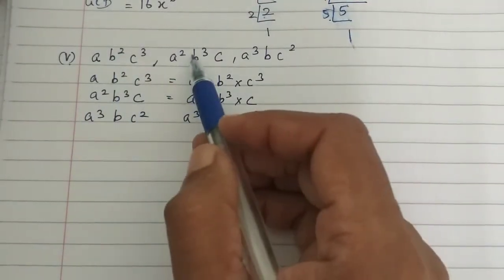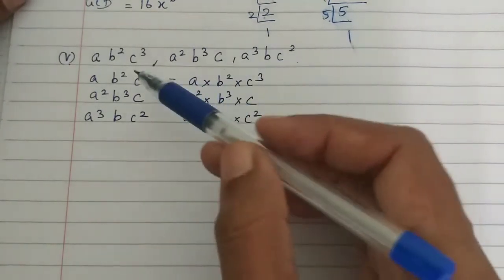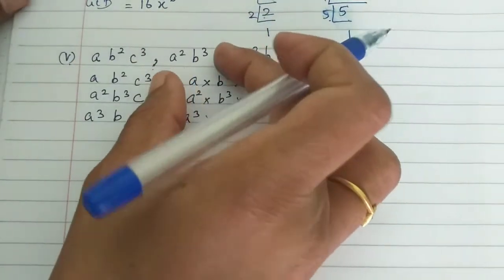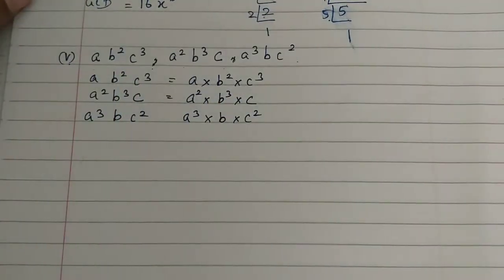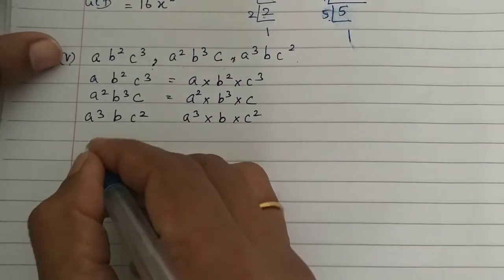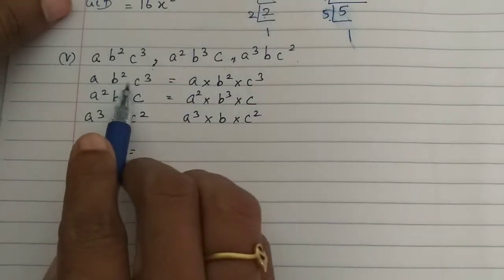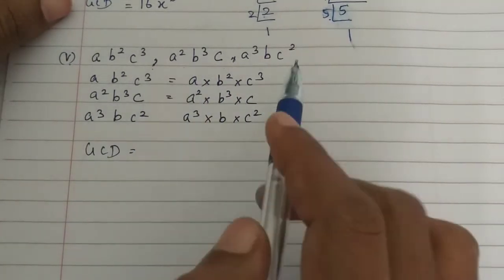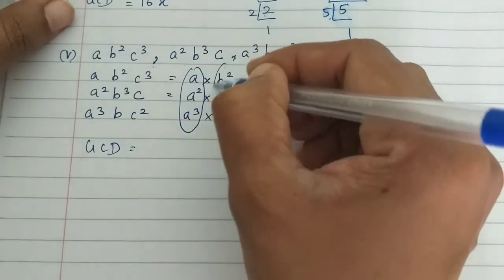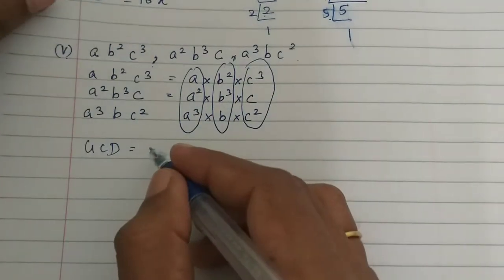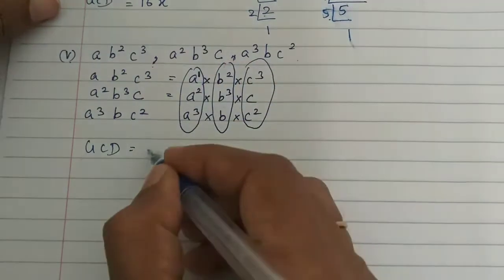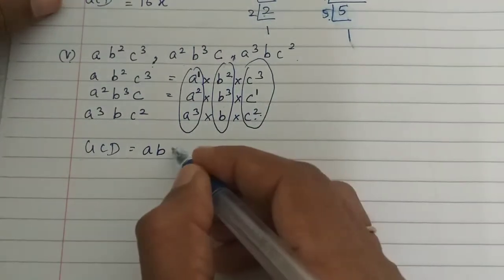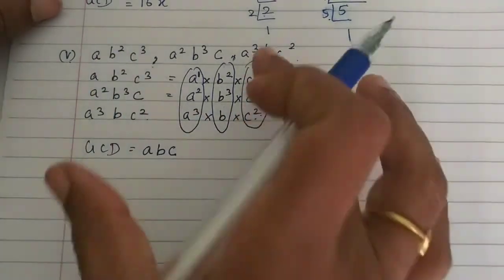The next subdivision: ab²c³, a²b³c, and a³bc². These are three different polynomials and we find the Greatest Common Divisor. Writing them out: a × b² × c³, then a² × b³ × c, then a³ × b × c². Now grouping by base: for a — powers 1, 2, 3 — least power is 1, giving a. For b — powers 2, 3, 1 — least is b. For c — powers 3, 1, 2 — least power is c. So the GCD is abc.